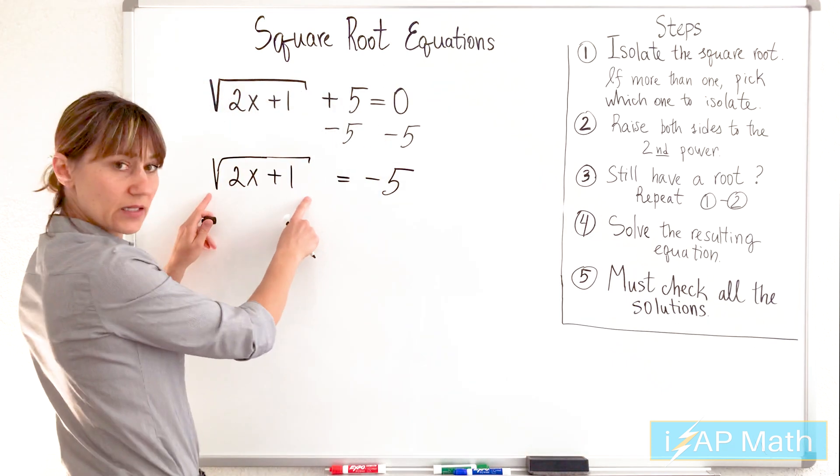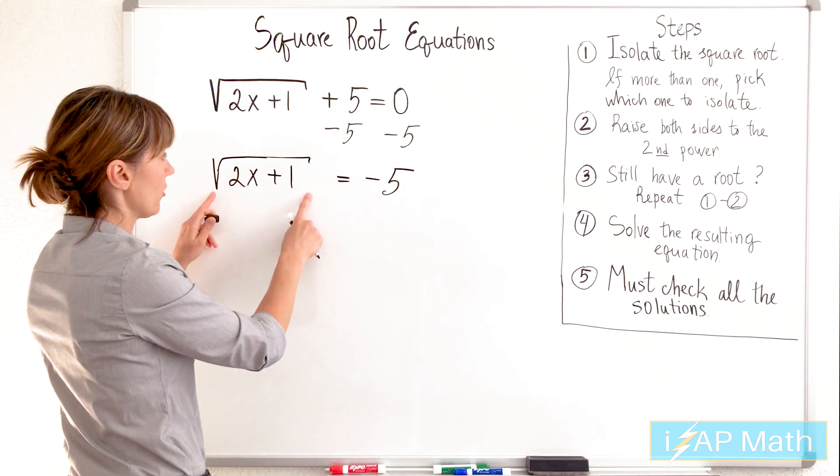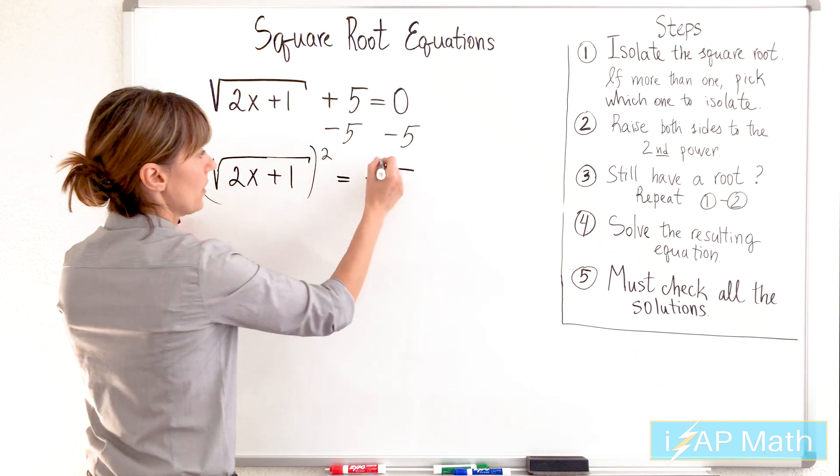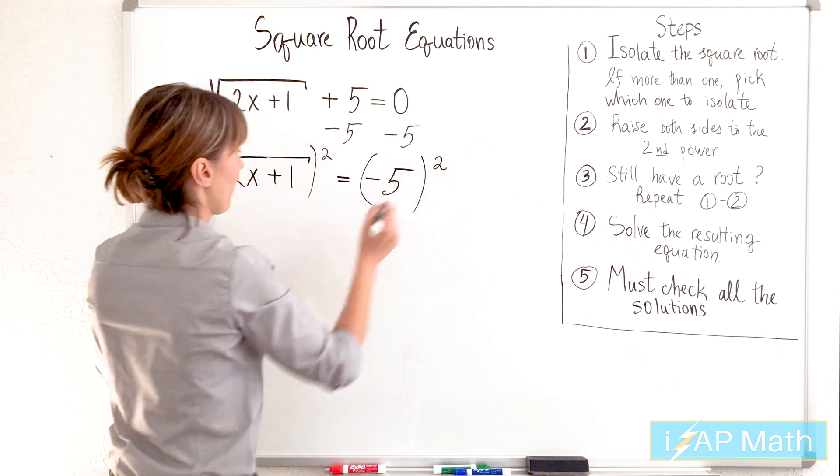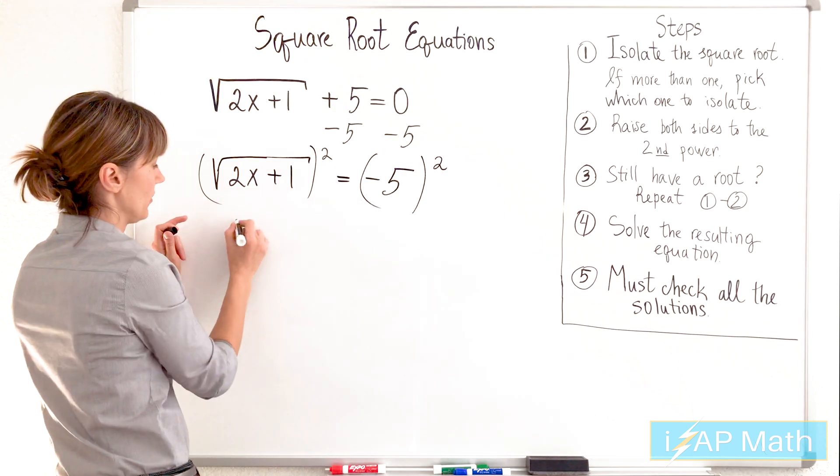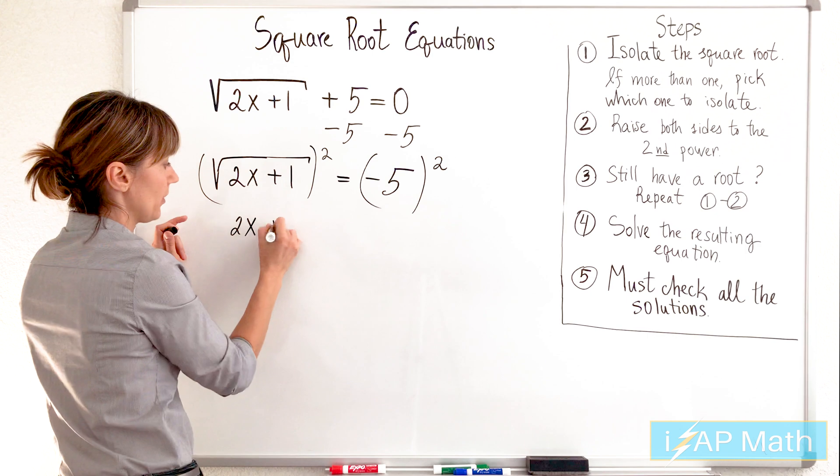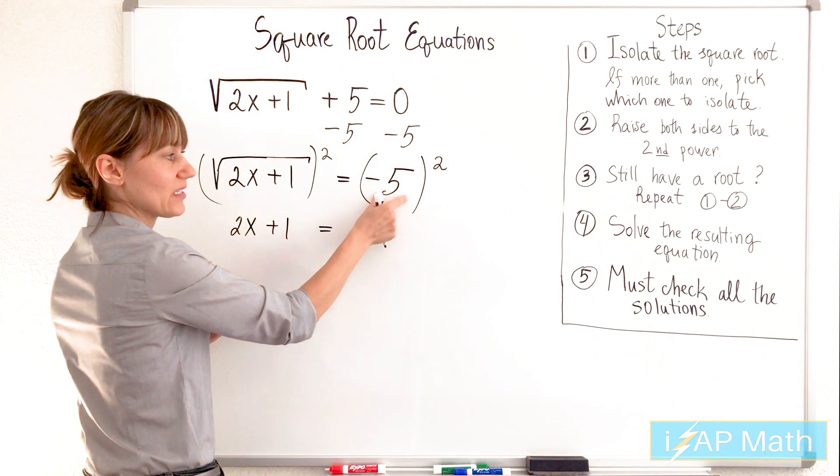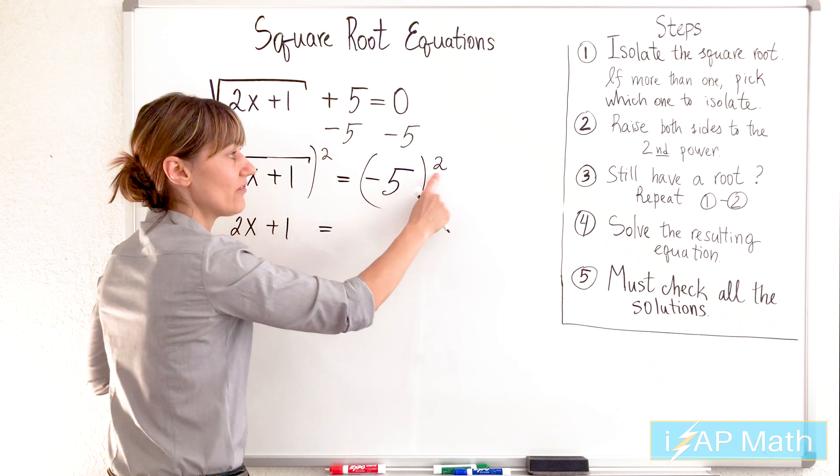The next step, we isolated the square root. In order to extract the variable, we're going to raise both sides to the second power in order to extract this expression underneath. So we have 2x plus 1. And look, see what's happening. We have a negative number raising to even power.